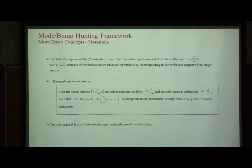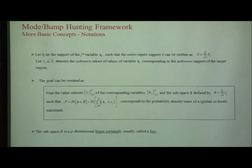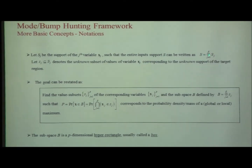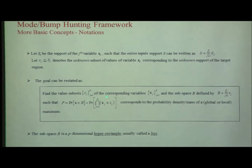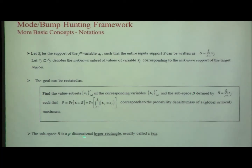More notation: suppose Sj is the support for the j-th variable Xj. The entire input support S can be written as the Cartesian product of the Sj over all variables. Denote by sj the unknown subset of values of variable Xj corresponding to the unknown support of the target region. The goal is to find this subset sj corresponding to Xj, and the subspace B, which can be written as a Cartesian product, such that the probability density corresponds to a global or local maximum. This region B — a p-dimensional hyper-rectangle — is called a box in bump hunting.